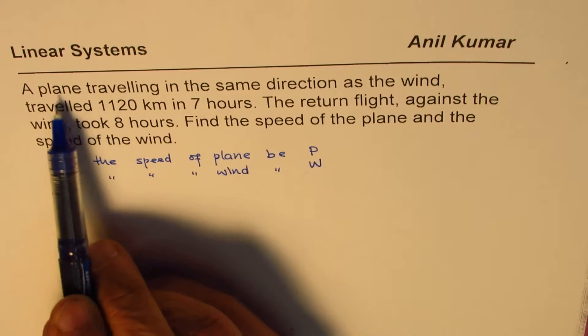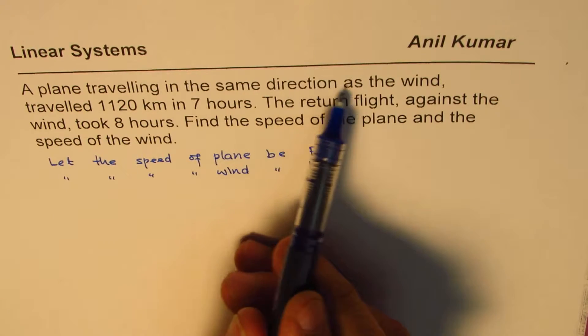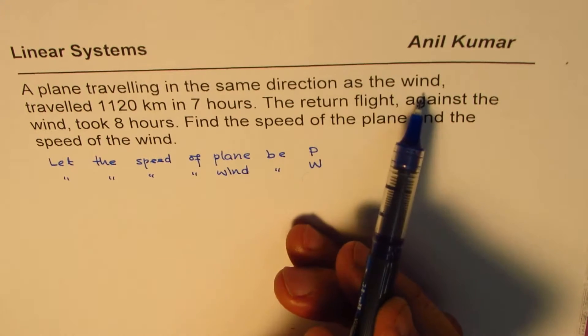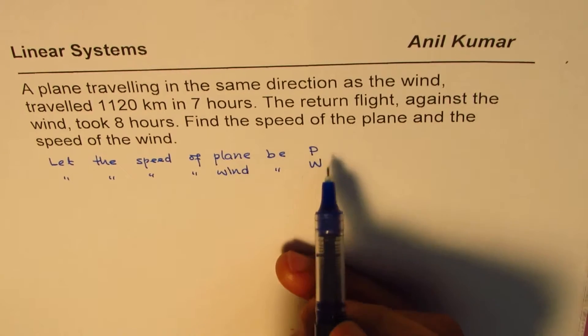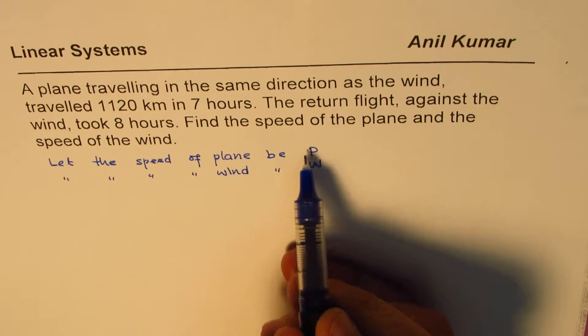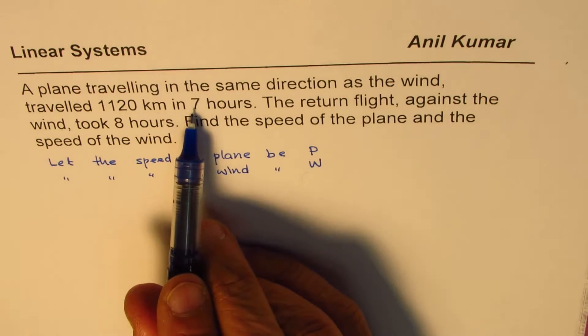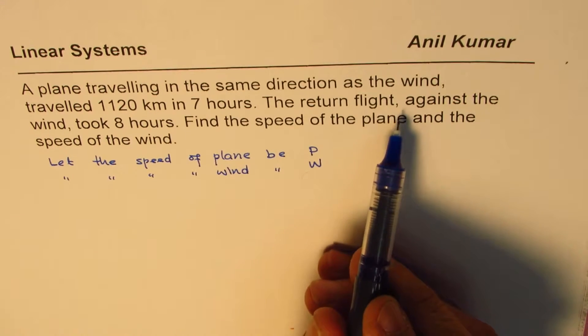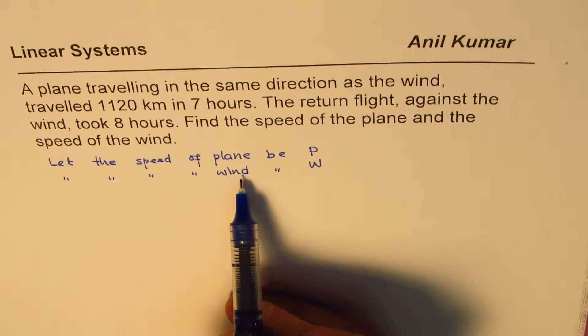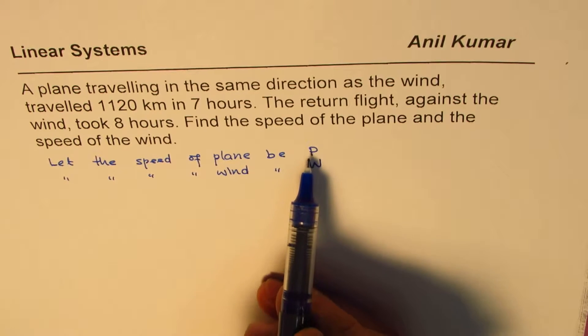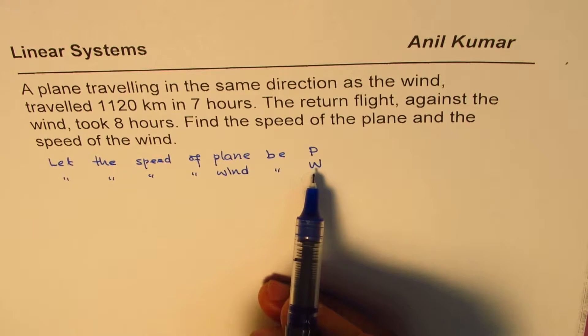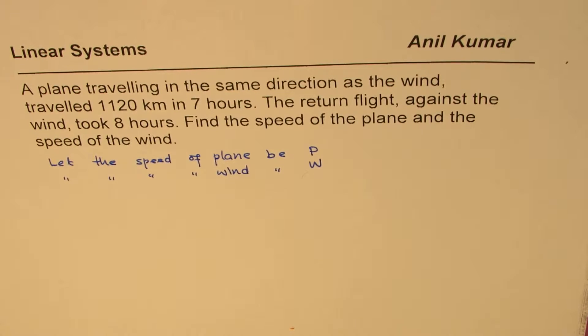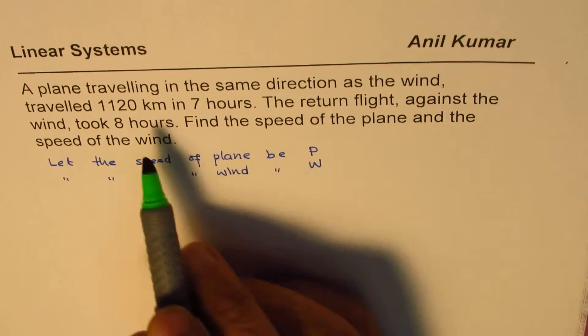Now we know when the plane is traveling in the same direction as wind, it is moving faster, so the speeds add up. And if it moves faster, it takes lesser time. So it traveled 1120 kilometers in 7 hours. On return, the plane is going against the wind. So this speed is P minus W. And it is lower speed, so more time the plane has taken. So that is what is confirmed from these values.